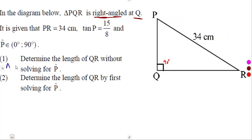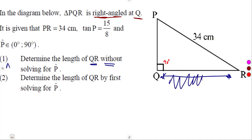On question number one, we are supposed to determine the length of QR — from Q to R — without solving for angle P. The question is: how is that possible? We need to find this side, yet we are not given a specific angle value and are told not to solve for angle P.